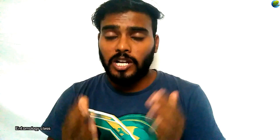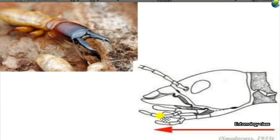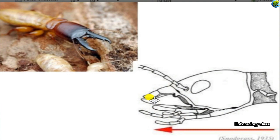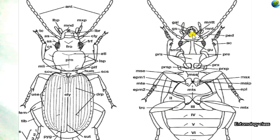The next kind is the prognathous head, where the long axis of the head is horizontal and the mouthparts are anterior in position, with the occipital foramen slightly inclined. Examples are soldiers of termites and larvae of endopterygota. The mouthparts are in a straight line with the body. In this type the gula — an extra sclerite present in beetles — is found. The gula sclerite keeps the prognathous mouthparts working forward.